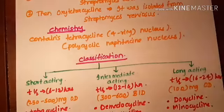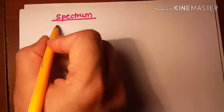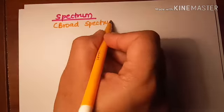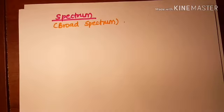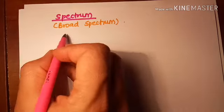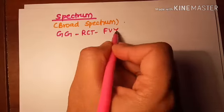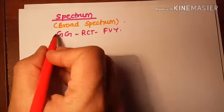Tetracyclines have a broad spectrum — broader than the macrolides. To remember the spectrum, use the mnemonic G-G-R-C-T-Y-F-V: the first G stands for gram-positive bacteria, and the second G stands for gram-negative bacteria.